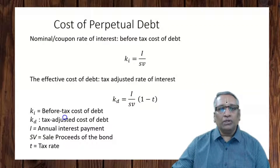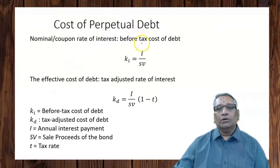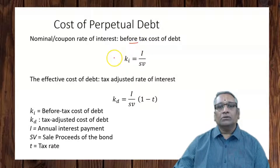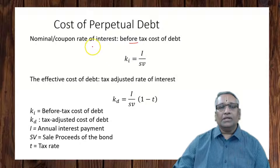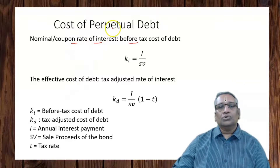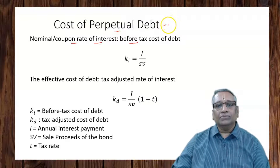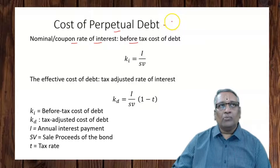Today we will understand the method of computing cost of debt for perpetual debt. In case of cost of perpetual debt, the cost of debt before tax is its coupon rate of interest. Perpetual debt means it is irredeemable — only the firm will pay the interest.